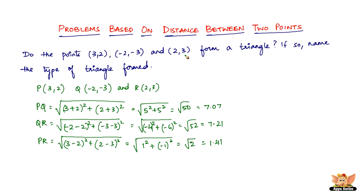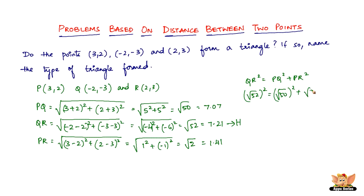The next question is: if so, name the type of triangle formed. If this is a right-angled triangle, QR would be the hypotenuse, so QR² should equal PQ² plus PR². Let's check: (√52)² equals (√50)² plus (√2)². The square and root cancel, giving 52 equals 50 plus 2, so 52 equals 52. Therefore, it is a right-angled triangle following the Pythagoras theorem — the hypotenuse squared equals the sum of the squares of the other two sides.